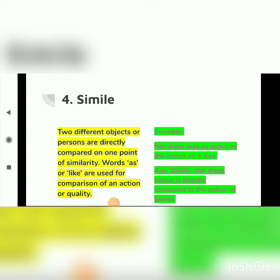The fourth figure of speech is simile. Simile is when two different objects or persons are directly compared on one point of similarity. Words 'as' or 'like' are used for comparison of an action or quality. When you see 'like' or 'as' in a sentence, it is mostly a simile.